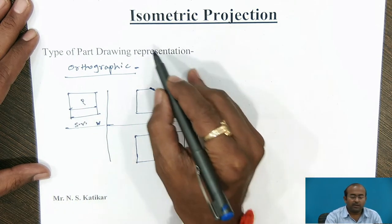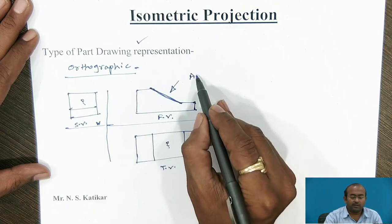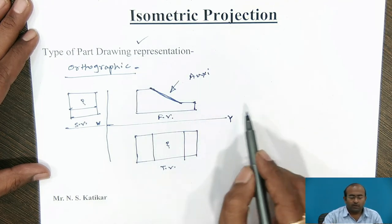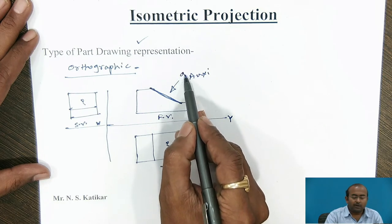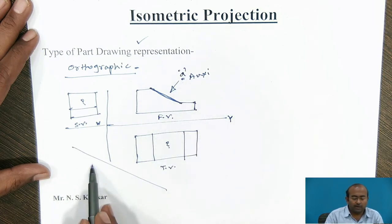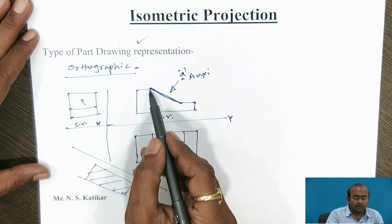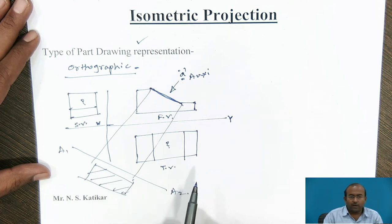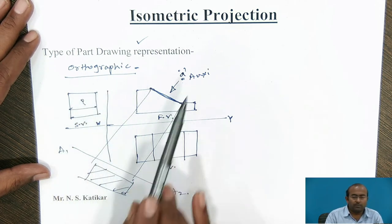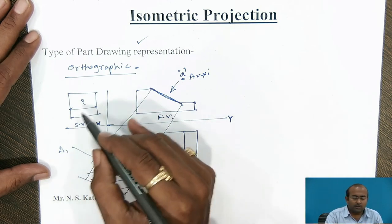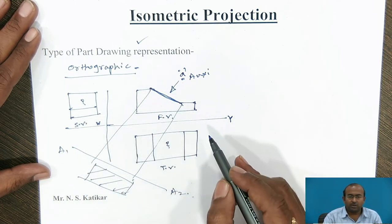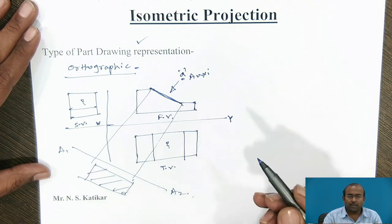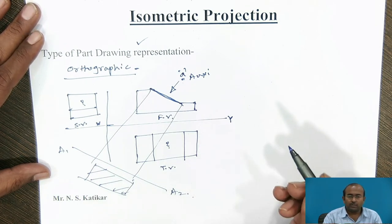For that reason, another drawing representation called the auxiliary view is used. Looking from a particular direction A, we generate that view on the opposite side, which gives us the true shape. This is the auxiliary plane we consider. Both the orthographic view and auxiliary view are two-dimensional and are not sufficient to generate 3D visualization of a part in the viewer's or reader's mind.